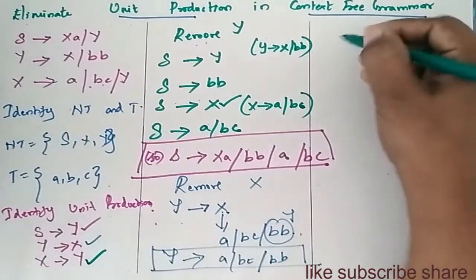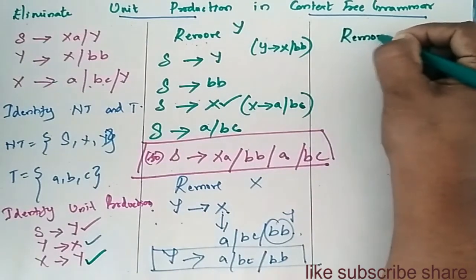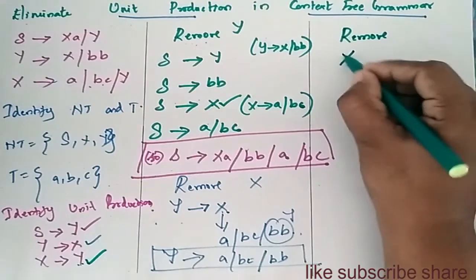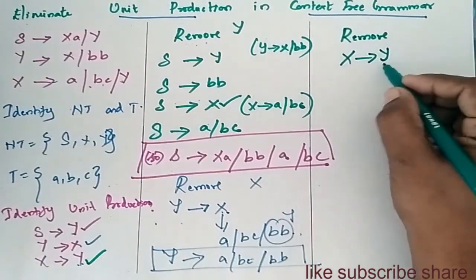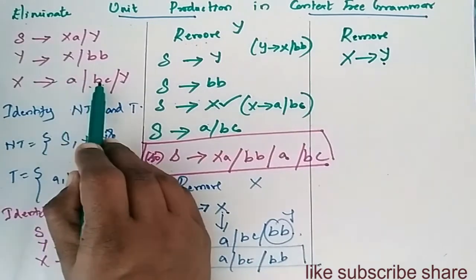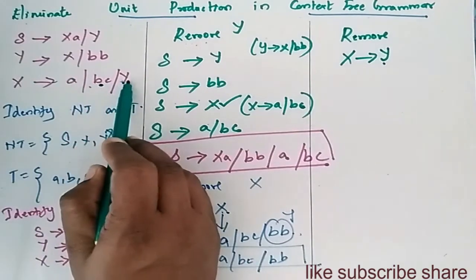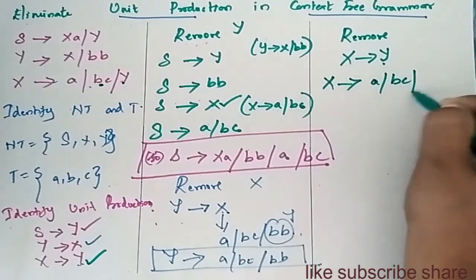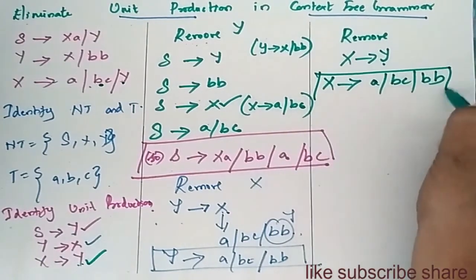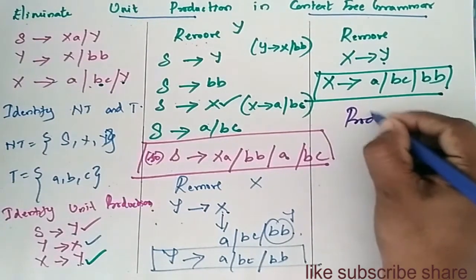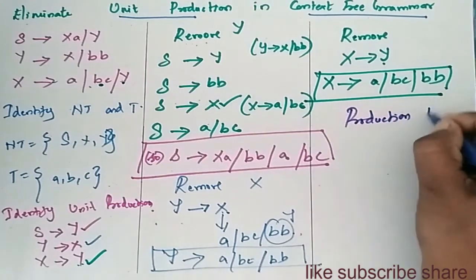Now remove X to Y. X determines Y. When we go for Y, its productions are A, BC, and BB. So X determines A, BC, and BB. Therefore, the final production rules are now established with all unit productions eliminated.